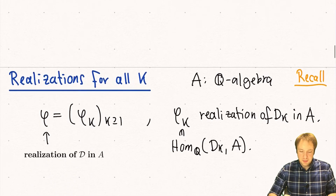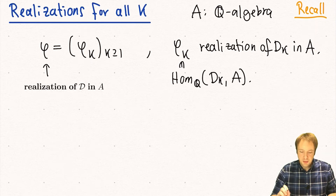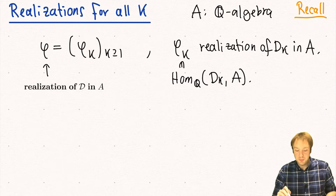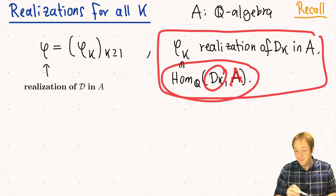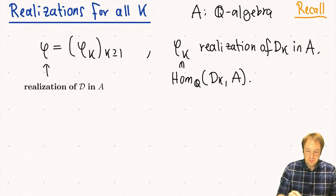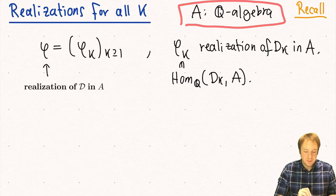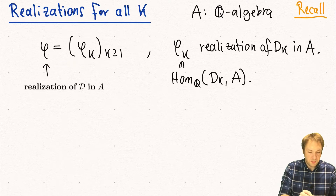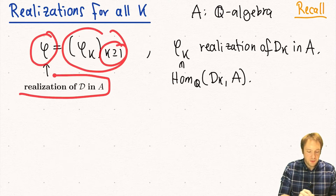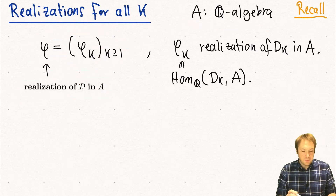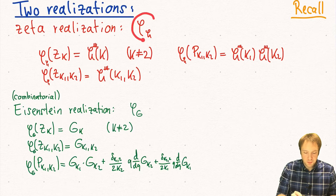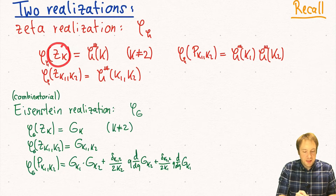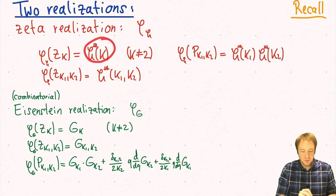Let's also recall what we meant by realizations for all k. In the first lecture on the formal double zeta space we fixed the weight k and then said a homomorphism from dk to some vector space A is called the realization of dk in A. Last time we extended this notation and considered a Q-algebra A and considered families of realizations. A family of realizations for each weight k is then called the realization of D in some Q-algebra A, and for this we had two main examples.